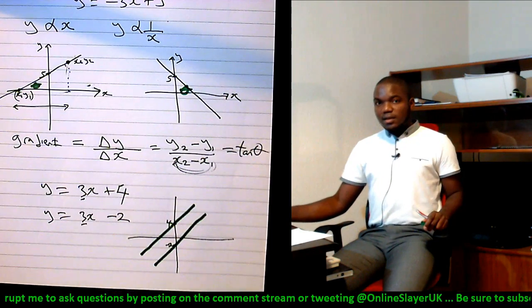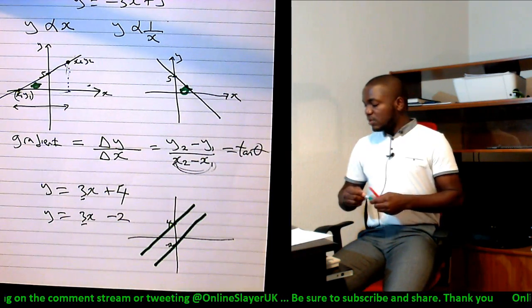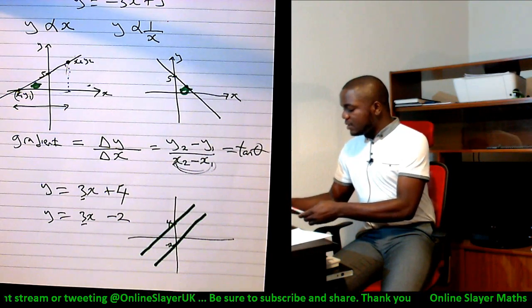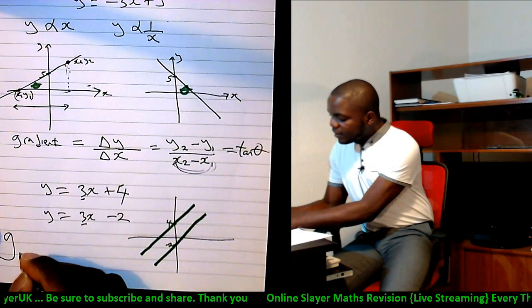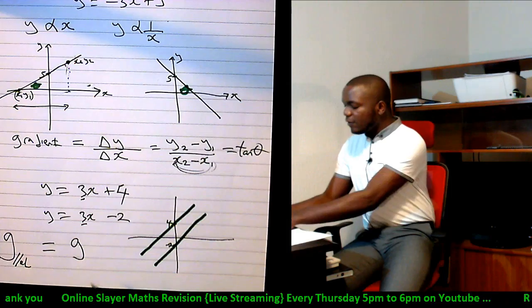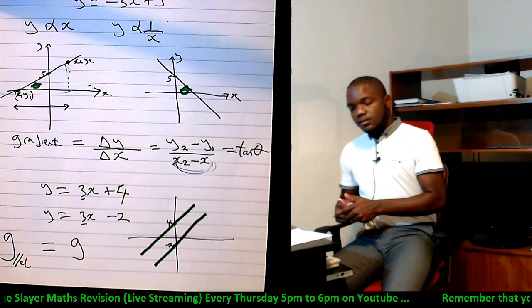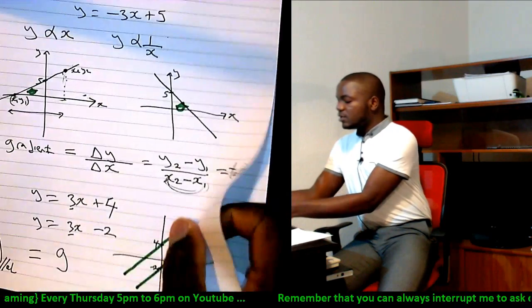So when you've got the same gradient, they will never meet. These two lines will never meet. So what I mean is that the gradient of a parallel line is the same as the gradient of the other line. Okay, they always have the same gradient.